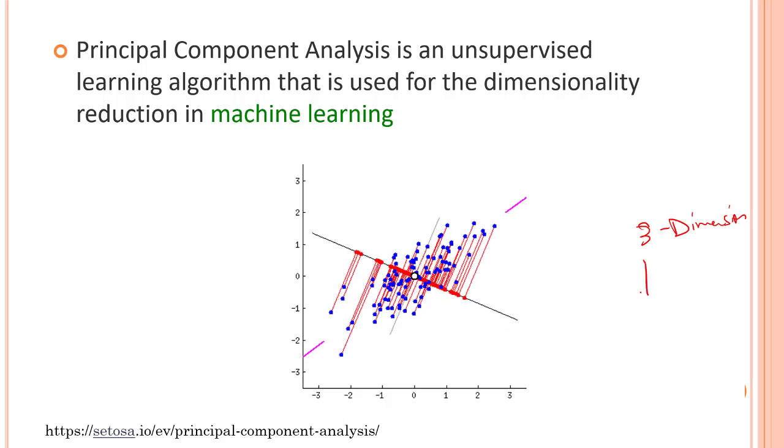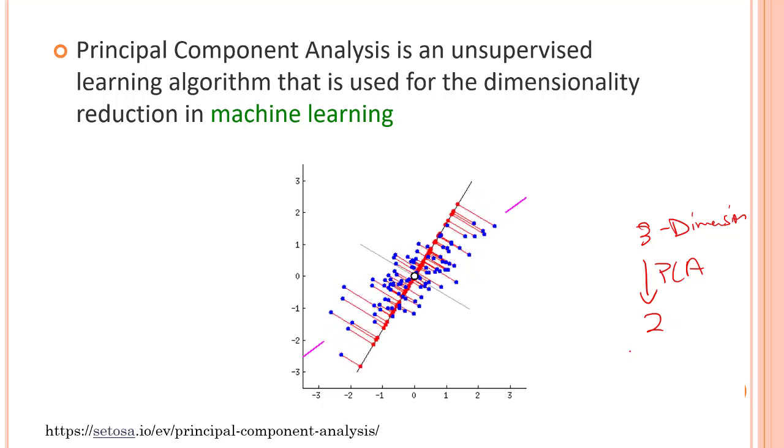After applying PCA, we might get two dimensions. We'll be getting two dimensions which is much less. Similarly, you can have very high dimensions and we can change it to a much smaller dimension in space, which is very helpful for us to visualize the data. Compression—actually what you're doing is you're compressing the data.